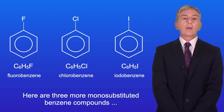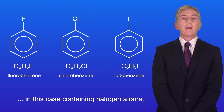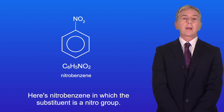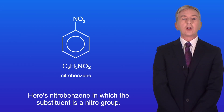Here are three more mono-substituted benzene compounds, in this case containing halogen atoms. Here's nitrobenzene, in which the substituent is a nitro group.